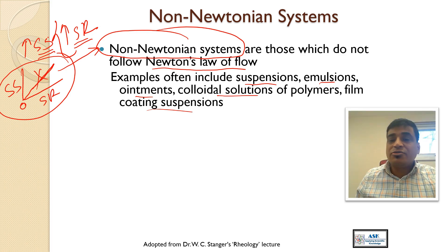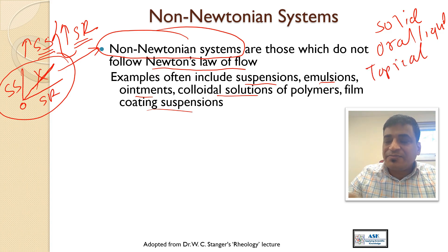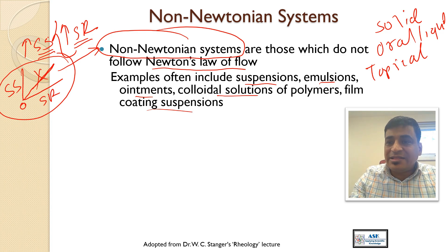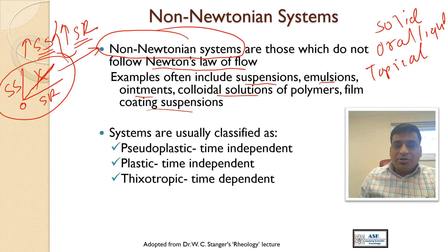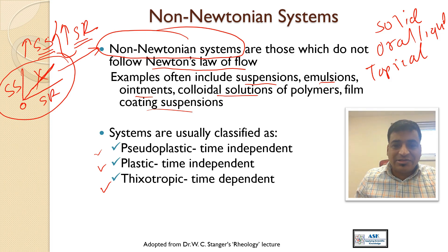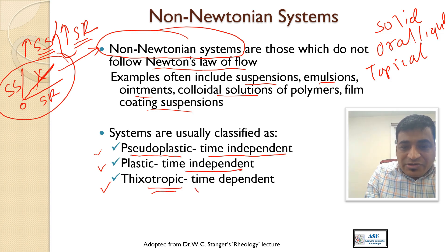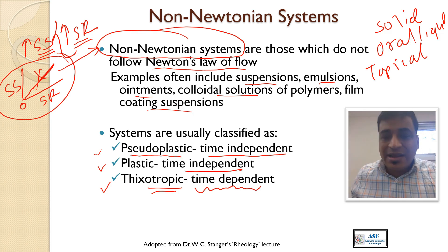Examples of non-Newtonian liquids include suspensions, emulsions, ointments, colloidal solutions, polymer film coating suspensions — these have wide applications in dosage forms like solid dosage forms, film coating solutions, oral liquids, and topical suspensions and emulsions. Non-Newtonian systems are divided into three main categories: pseudoplastic, plastic, and thixotropic. Pseudoplastic and plastic are time independent, while thixotropic is time dependent.